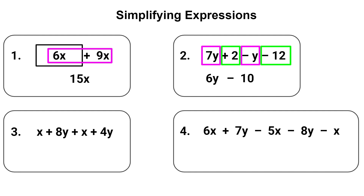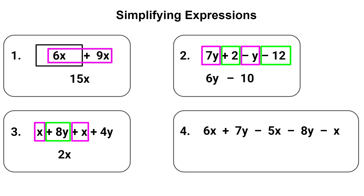For number three we have the expression x plus 8y plus x plus 4y. Let's draw a box around the first term x and also around the other terms with the variable x. Now combining x plus x equals 2x. Continuing with the remaining like terms: 8y and 4y are alike, so 8y plus 4y equals 12y.